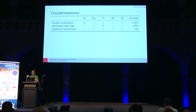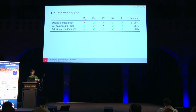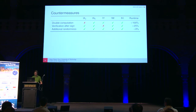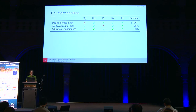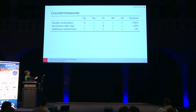Since verification is much faster than signing — about one quarter of the runtime — an alternative countermeasure is to verify the signature after generating it. However, if you fault the generation of the nonce, you simply sign with a different nonce, and that's still a valid signature, so this countermeasure can be bypassed in that scenario.